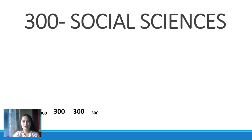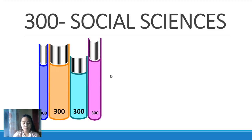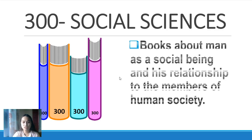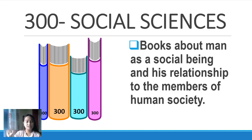Next is 300 — the Social Sciences. In the book, the spine label is numbered 300. These are books about man as a social being and his relationship to the members of human society — your relationship in your community to the members of human society, the stakeholders. You can search in the 300-numbered spine label section.